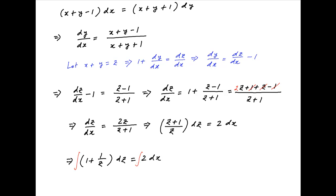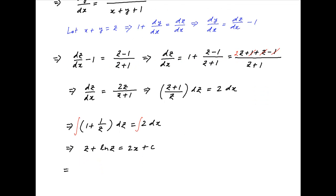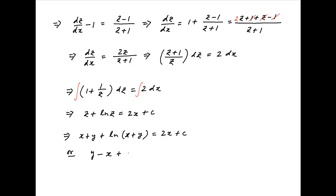Now integrating both sides we get z + ln(z) is equal to 2x plus the constant of integration. Replacing z with x + y, we get x + y + ln(x + y) = 2x + c, or y - x + ln(x + y) = c, which is the required solution.